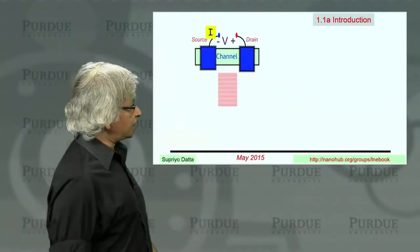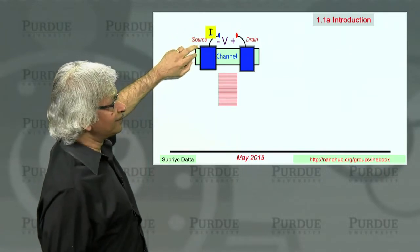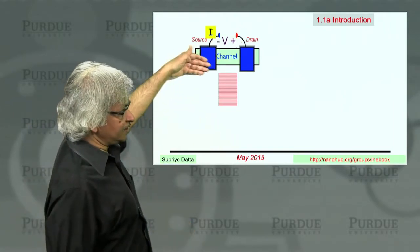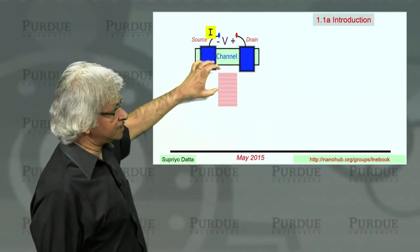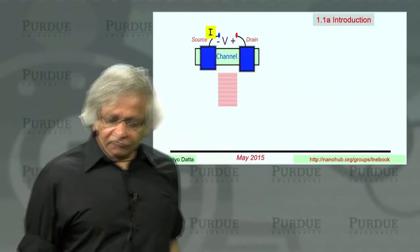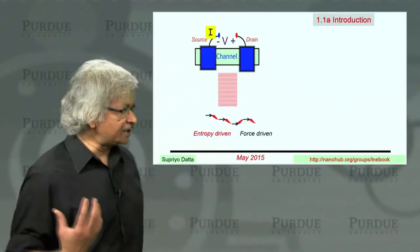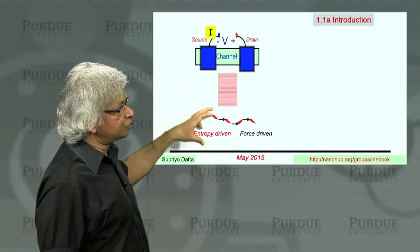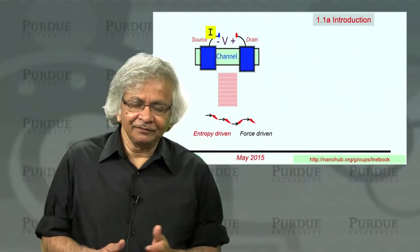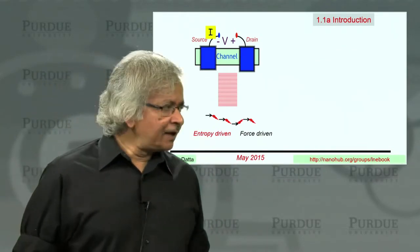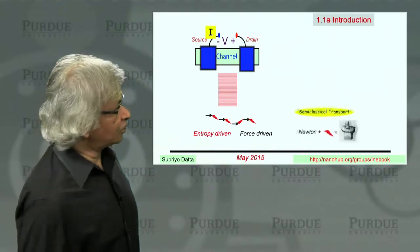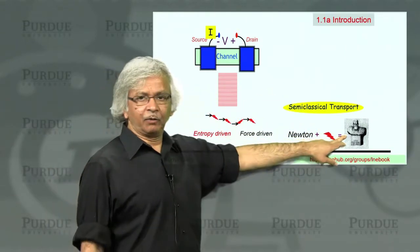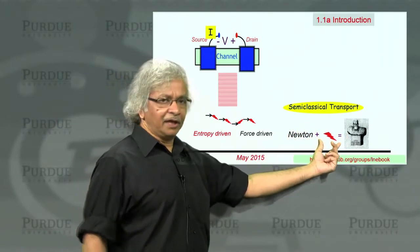As you know, in this course our defining picture has been this one, which is a channel through which current flows and you have a source and a drain. One thing I've stressed is current flow depends on these energy levels in the channel, the density of states that's available. What generally makes transport complicated is that this process of electrons getting from one contact to the other involves two types of processes: the mechanical ones which are force-driven, and then the ones that are entropy-driven. In transport theory, it took a lot of work to combine these two into a single viewpoint, and that's the Boltzmann equation.